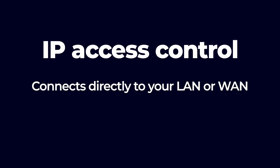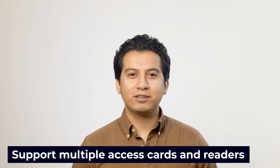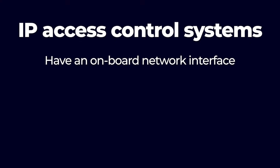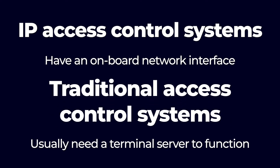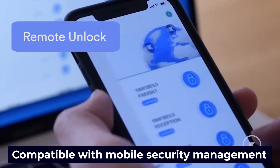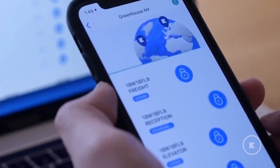Unlike traditional systems, IP access control connects directly to your LAN or WAN, meaning it can accurately keep track of all input and output data and record everyone who enters and exits your business. An IP access controller can support multiple access cards and readers, which generally use Ethernet to transmit data about building entry. IP access control systems have an onboard network interface, whereas traditional access control systems usually need a terminal server to function. IP access control is compatible with mobile security management, whereas traditional access control is generally not.